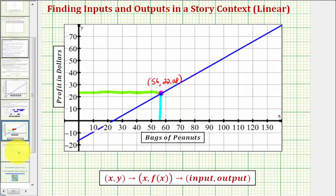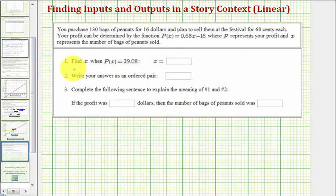Now there's a second part to this question. The next part asks us to find x when p(x) equals 39.08. So notice here, they're giving us the output of the function value, and we're asked to find the input, or x.